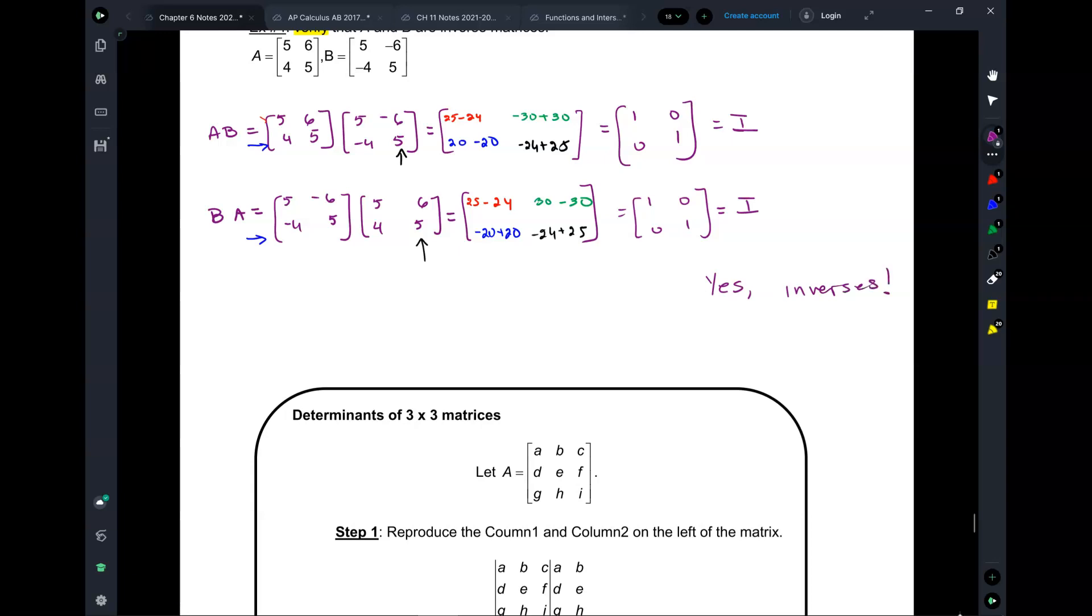That gives you 1, 0, 0, 1, identity. Because both ways gave you the same matrix, and both of them are identity, then we can say yes, they are inverses. So that means A and B were inverses of each other.